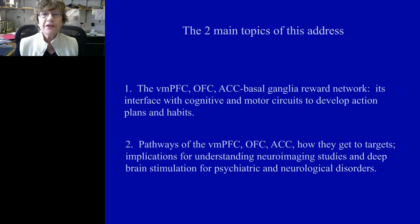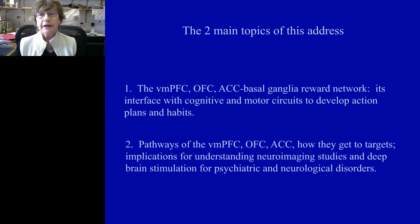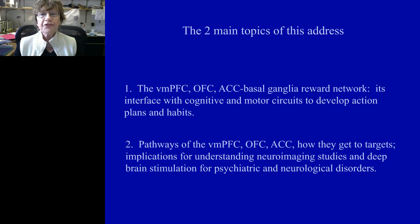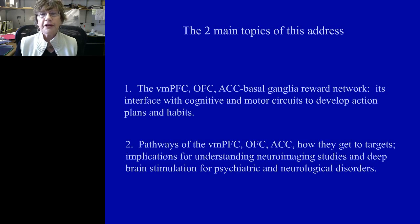What I want to talk about is how these three areas interact with the basal ganglia, focusing on this basal ganglia cortical reward network — and importantly, how those connections interface with both cognitive and motor circuits that help us develop action plans and habits. As we move through life, we make decisions based on motivation and reward, but ultimately resulting in a particular motor action.